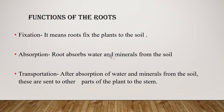Now let's understand the various functions of roots. Roots perform various functions which help a plant to grow well. The first function is roots fix the plant to the soil — if roots were not there, a plant would fall down. The second function is absorption: roots absorb water and minerals from the soil, and these are sent to other parts of the plant through the stem. Whatever water we put in the soil, roots absorb it and transport water and minerals through the stem, which is very important for the growth of the plant.